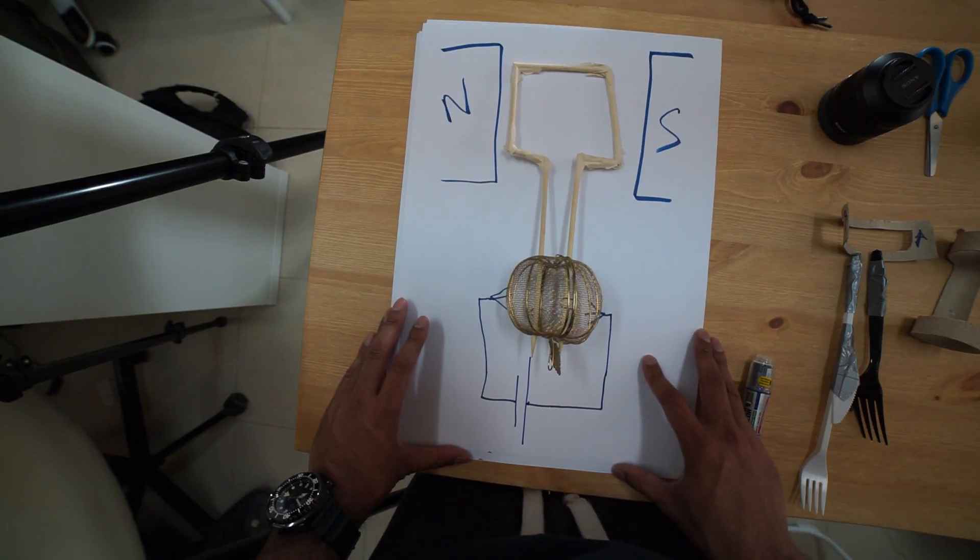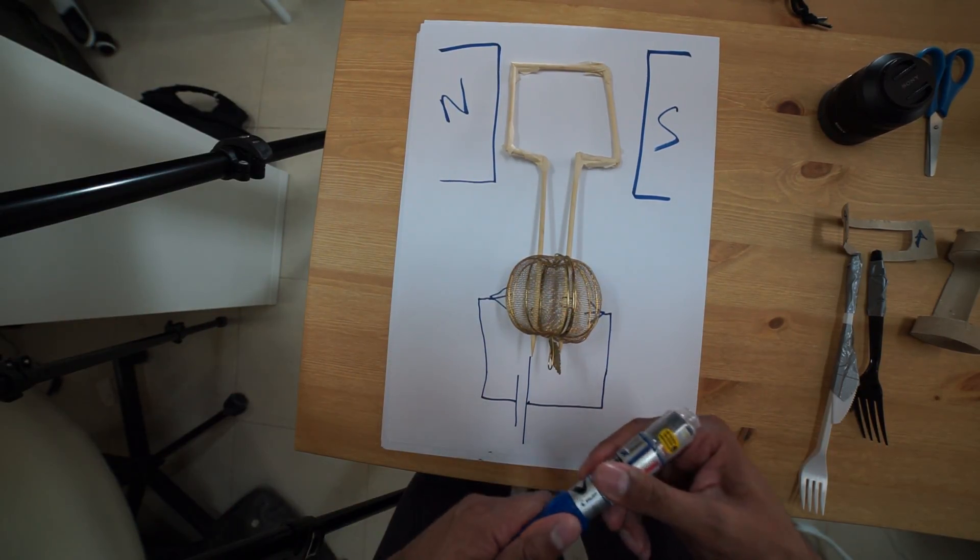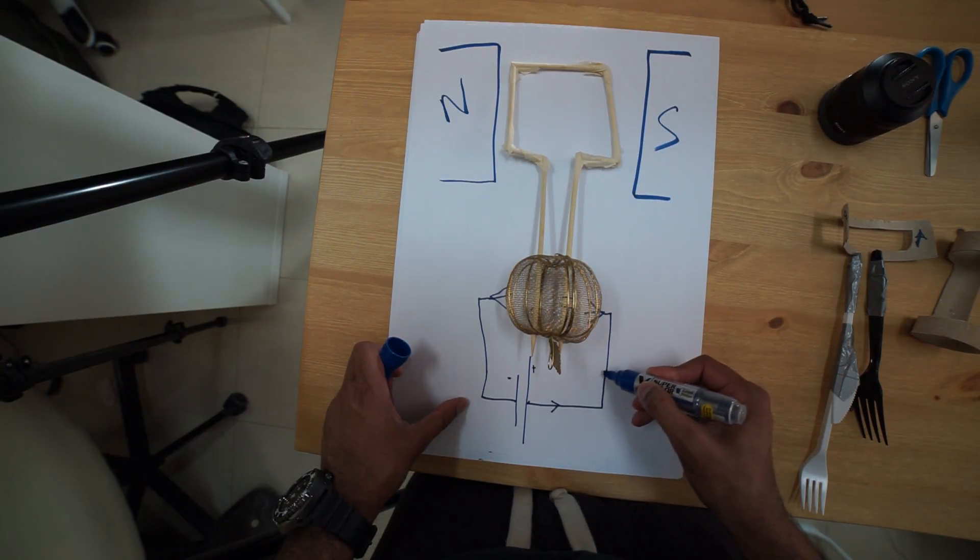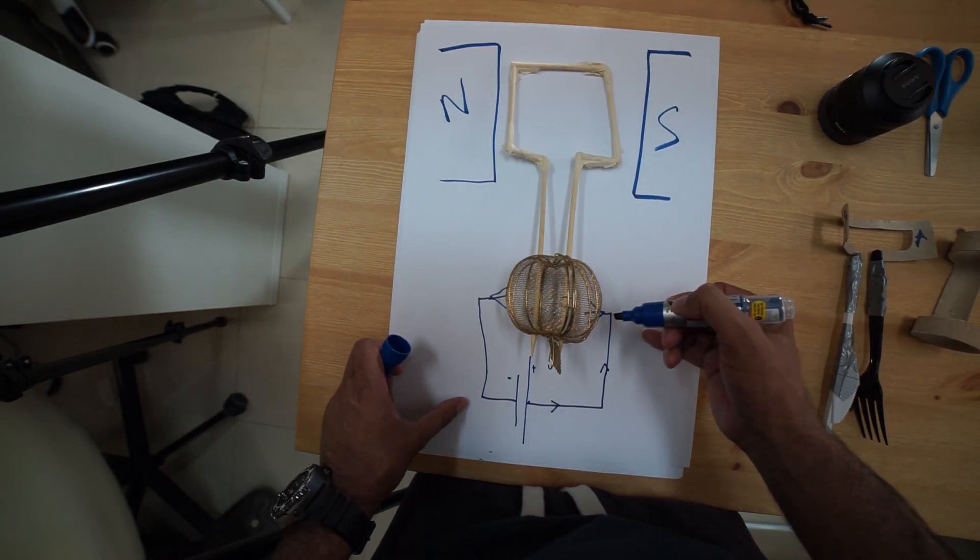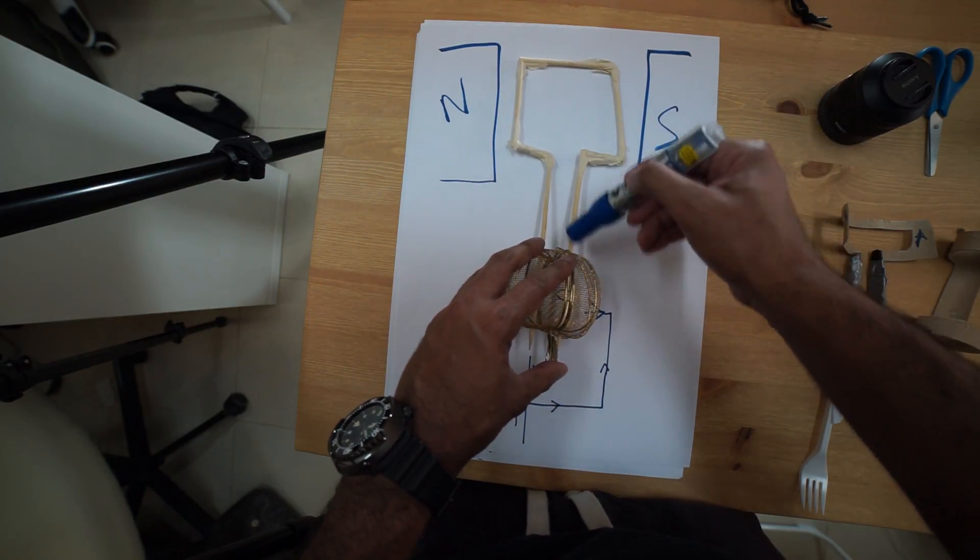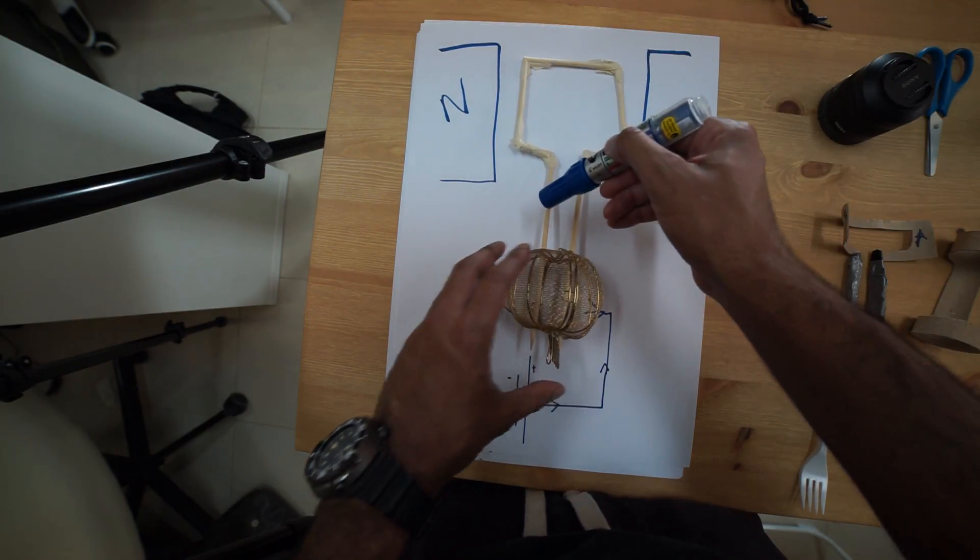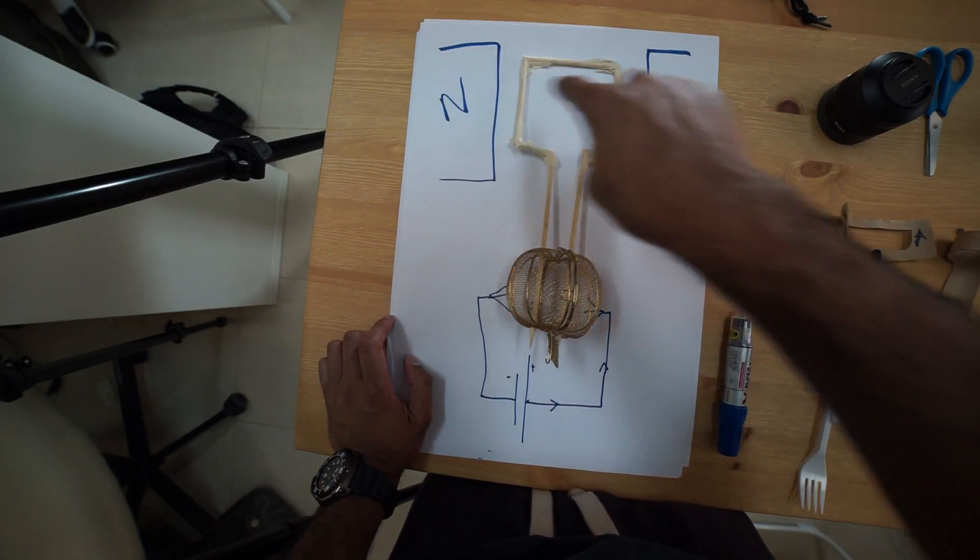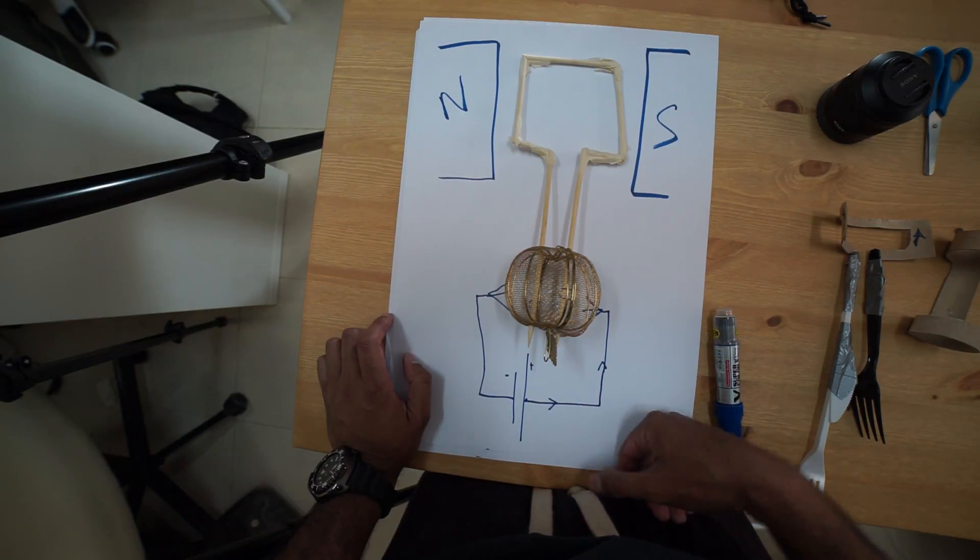Now conventional current always flows out of the positive, so it's going to go out of here, up here through the brush, into the split ring commutator, and is going to go up all the way around and then back to the negative here. And the magnetic field is going to be this way.